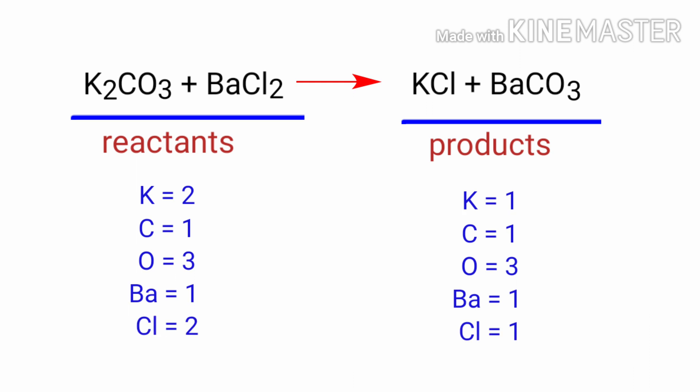If you look at this equation, the equation is not balanced. In the reactants side there are two potassium atoms, one carbon atom, three oxygen atoms, one barium atom, and two chlorine atoms.